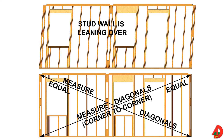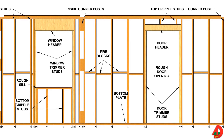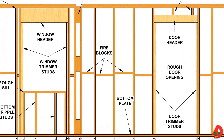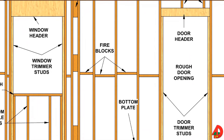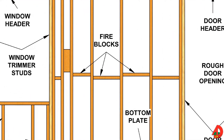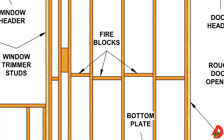Diagonal braces such as metal braces or wood let-in braces may be used as diagonal bracing. Fire blocking may be placed in higher walls to slow the rate of a fire that may occur inside the walls. In addition, fire blocking can also be used as a nailing base for the edges of plywood or gypsum board panels.